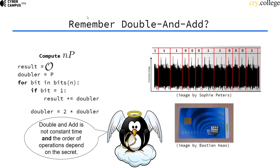If there was only a double operation, we know that the secret must have been, on this position, the bit must have been 0. Just by looking at the power consumption, we can directly see the secret scalar, which is problematic.